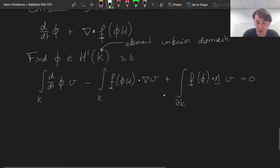That also gives us an element boundary term where we have f of phi dot n. These are both vectors, times v. That has to be equal to zero. For all functions v also in H1(k).